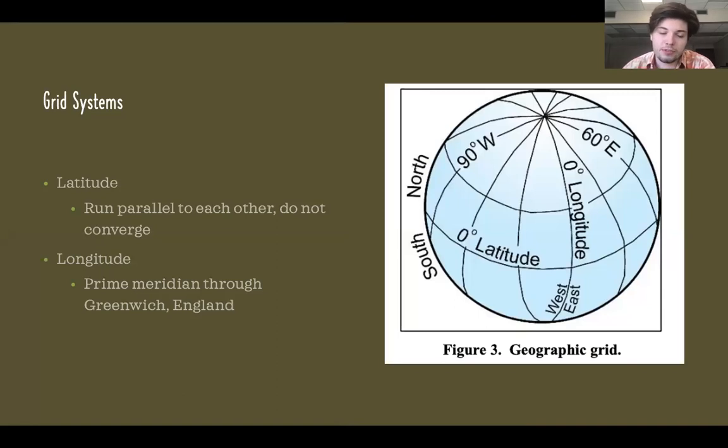The second main concept from this week is grid systems. You've probably heard about it before. You've maybe covered it in lecture already, but latitude and longitude - latitudes run horizontal, longitudes run vertically. For this lab, it's important to remember that latitudes run parallel to each other and they do not converge. And it's important to note that for latitude, zero degrees is at the equator, but for longitudes, it's at the prime meridian, and the prime meridian runs through Greenwich, England.